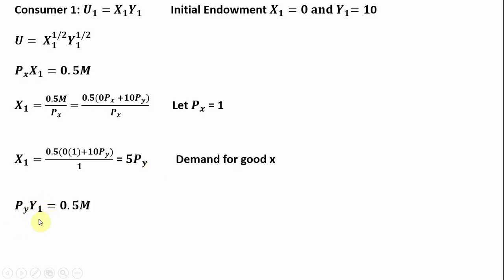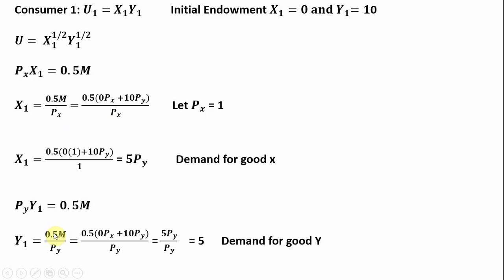Doing a similar thing for good y for this consumer: the consumer will spend half their income on good y. Getting consumer 1's demand for good y by dividing through by the price of good y, and substituting 1 in for the price of good x, the consumer will buy 5 units of good y.